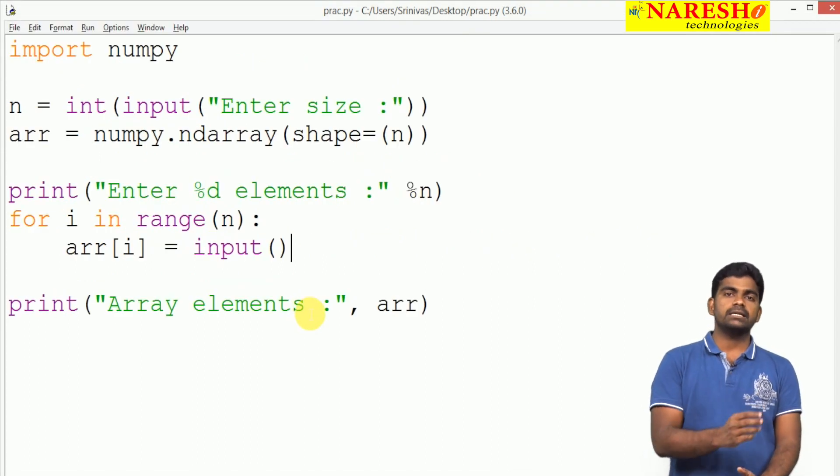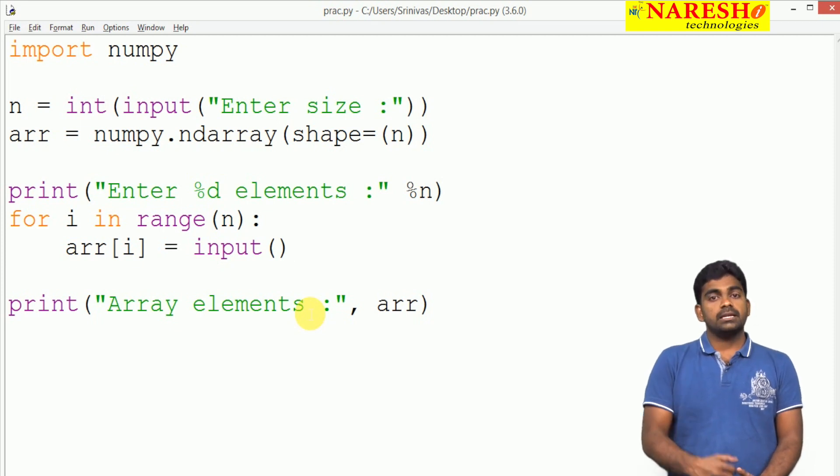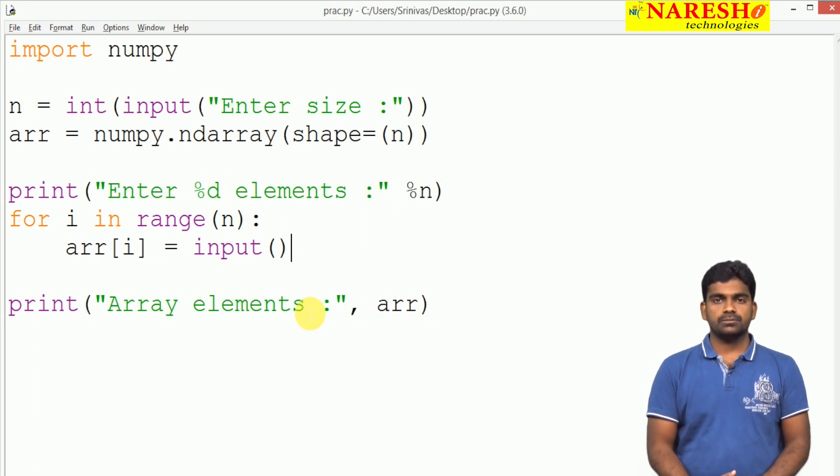By default the type is float type. If you want to convert into integer, you can convert. Then how can we store string objects? That we will see in coming videos. Hope you understood.